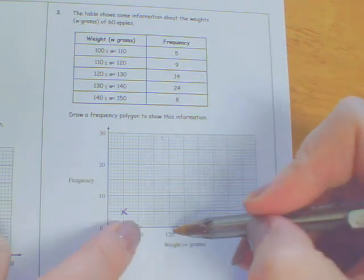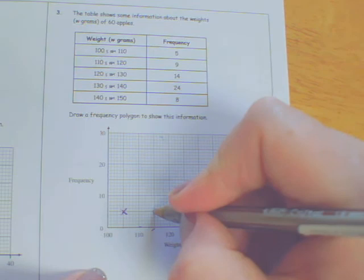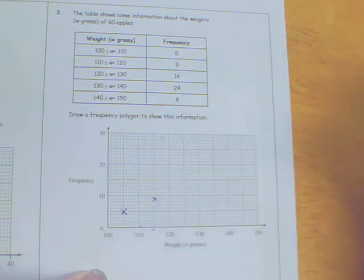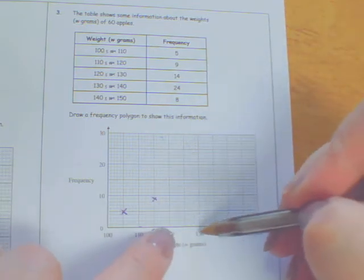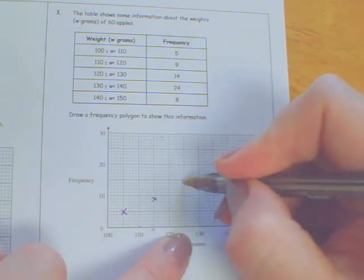For the next one, I'm going 110 to 120. I want to go halfway and go up to number 9. For 120 to 130, I want to go halfway and go all the way up to 14.